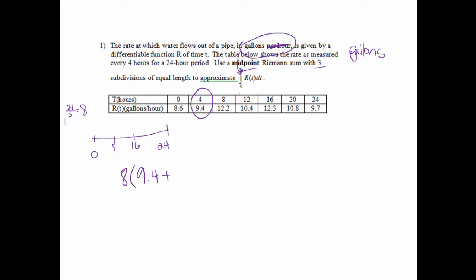And then between 8 and 16, 12 is my midpoint, so plus 10.4 would be my R value. And then between 16 and 24, 20 would be my midpoint, so 10.8 would be my R value. And if I just calculate that out, that will be 244.8, and we've already established that our units will be gallons.